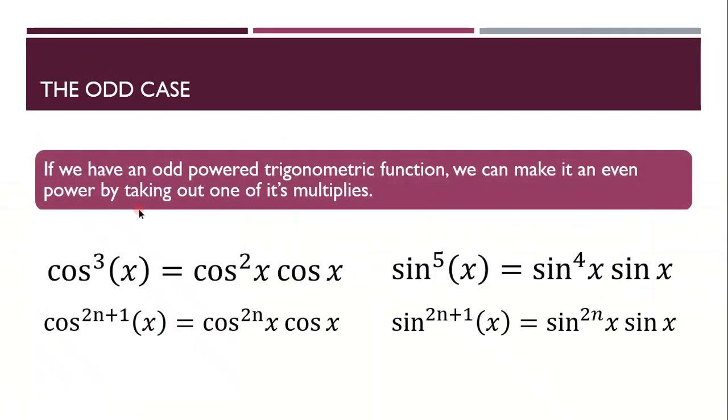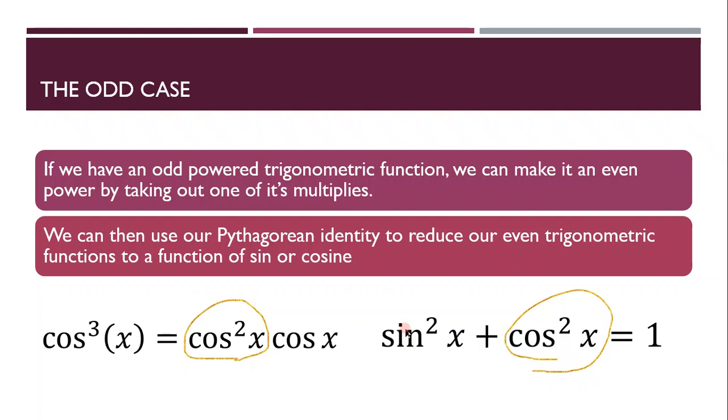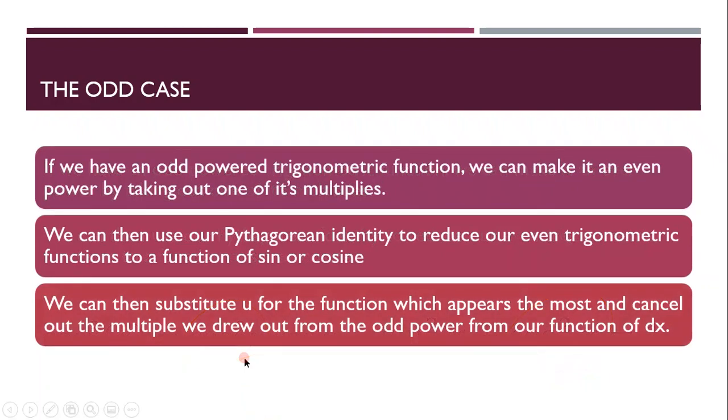So the odd case. If we have an odd-powered trigonometric function, we can make it an even power by taking out one of its multiples. So for example, if we have cos to the third power, we can split it to cos squared times cos x. We can then use our Pythagorean identity to reduce such even trigonometric function to a function of sine or cosine. So we can substitute in cos squared equals one minus sine squared. We can then substitute u for the function which appears the most, and cancel out the multiple drawn out from the odd power from our function of dx.